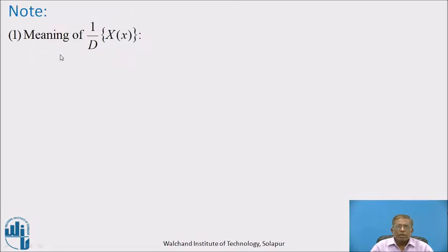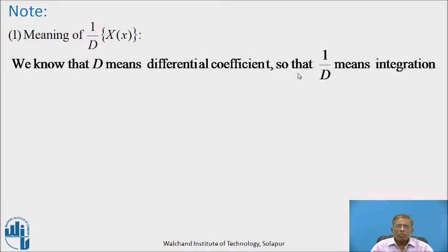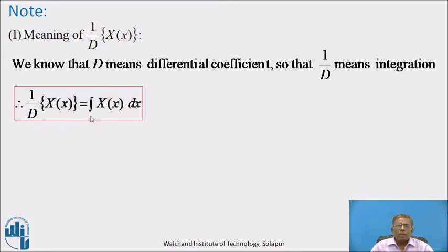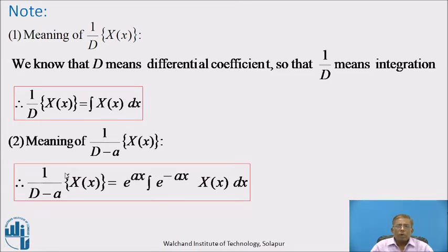Note that: Point 1 — meaning of 1/D operating on X(x). Since D means differential coefficient, 1/D means inverse of differential, that is integration. Therefore 1/D · X(x) = ∫X(x) dx. Point 2 — meaning of 1/(D − a) operating on X(x). It can be simplified as: 1/(D − a) · X(x) = e^(ax) · ∫e^(−ax) · X(x) dx. These are two fundamental results essential to find particular integrals.